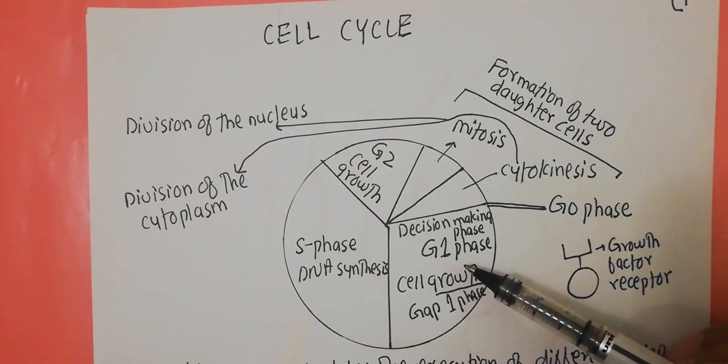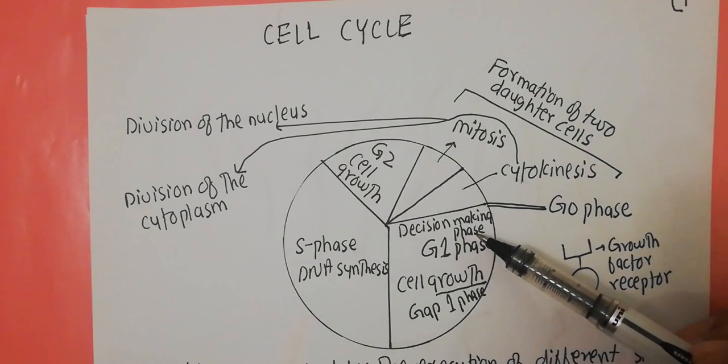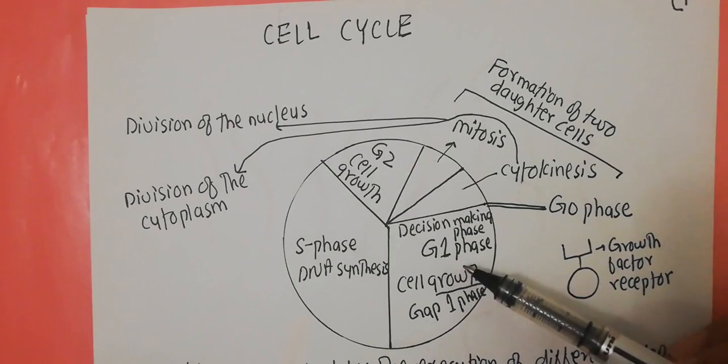During the G1 phase of the cell cycle, the cell is actively growing and preparing itself for cell division. The G1 phase is also known as the decision-making phase. It is during this phase that the cell decides whether it will go for cell division or not.